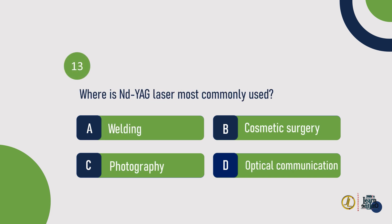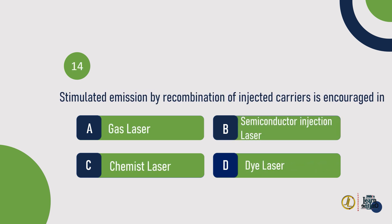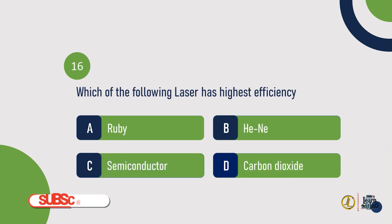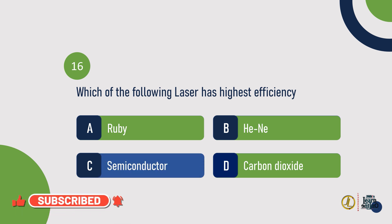Question 13: Where is Nd:YAG laser most commonly used? Answer: Cosmetic surgery. Question 14: Stimulated emission by recombination of injected carriers is encouraged in — semiconductor injection laser. Question 15: The pumping source in helium-neon laser is — electrical discharge. Question 16: Which of the following laser has highest efficiency? Answer: Semiconductor laser.